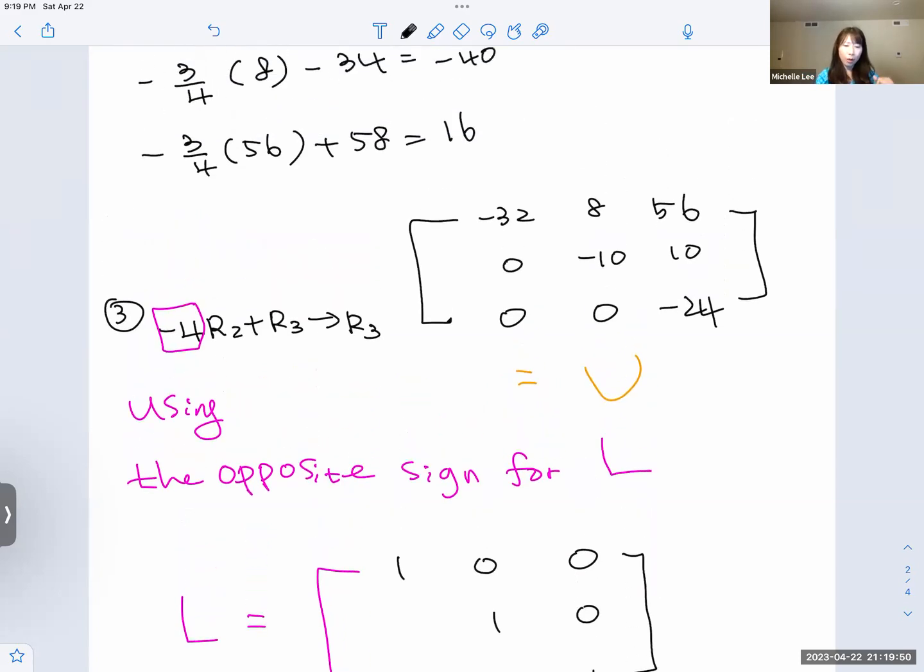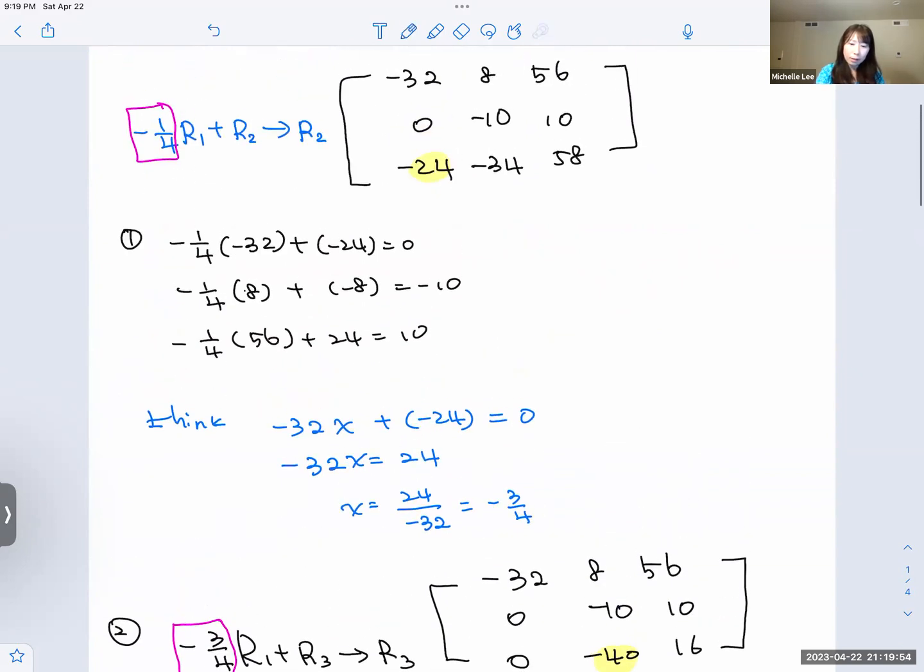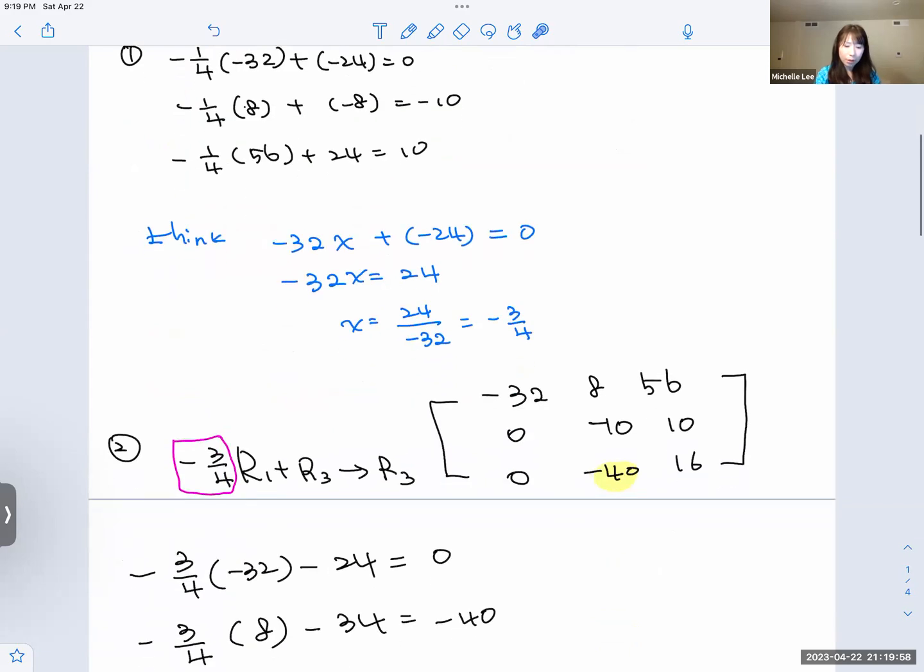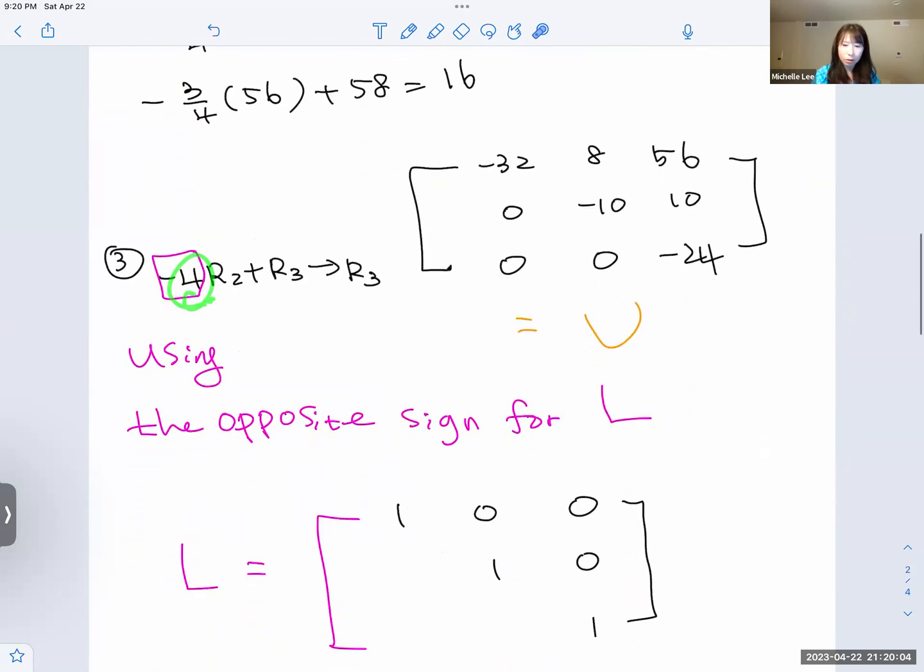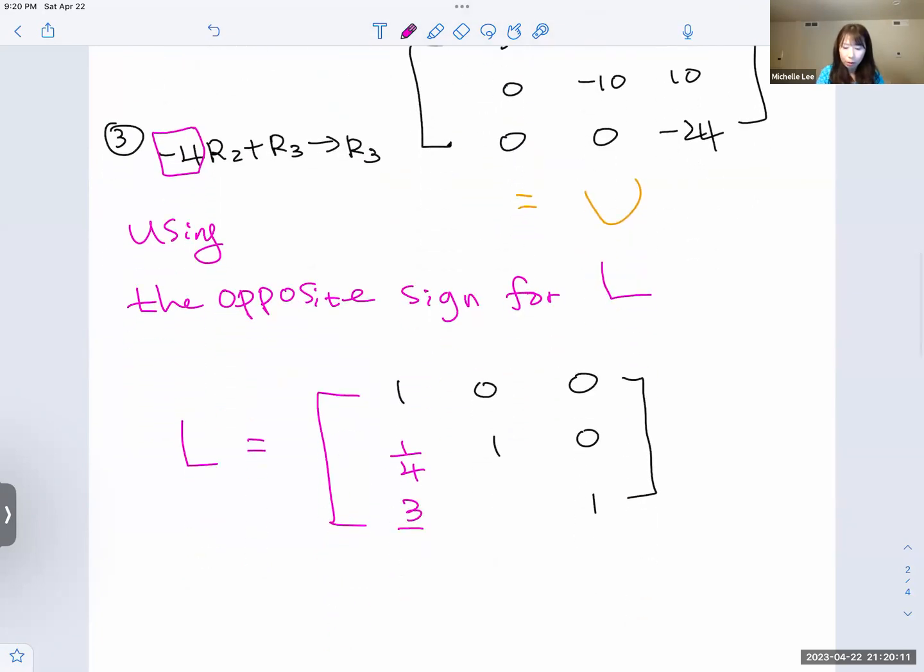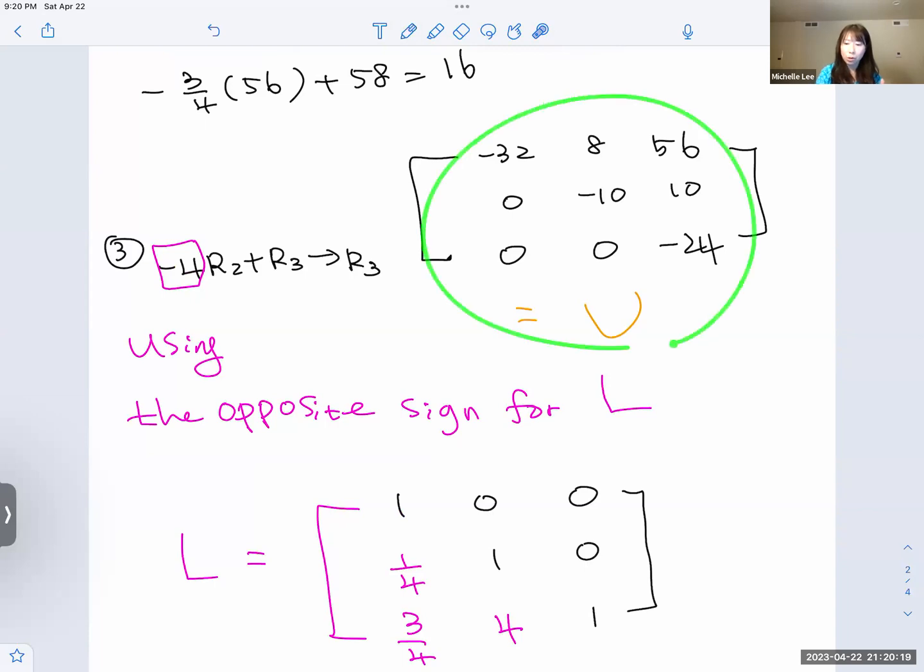So this will be 1/4, positive 4, and 3/4, and positive 4. So this is L. And this is U. How do we check the answer? Check with Desmos.